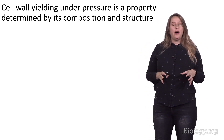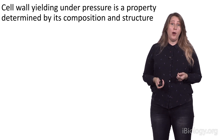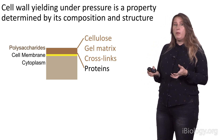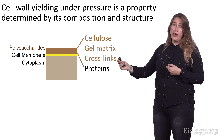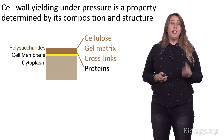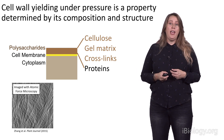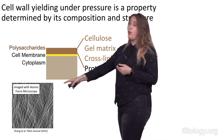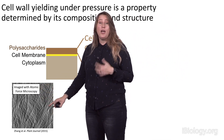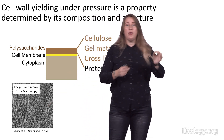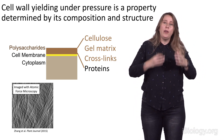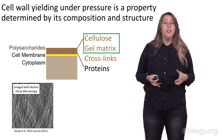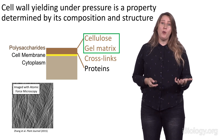Cell wall yielding under pressure is going to be a property of the composition and structure of the cell wall. We have a polysaccharide-based cell wall — it's mostly made of sugars. Here we're going to focus on two components: cellulose, which is a rigid, fibrous material, and the gel matrix within which it's embedded. Here we can see an image of a plant cell wall taken with an atomic force microscope, showing fibers due to cellulose alignment going in particular directions. In Arabidopsis, that gel matrix is mostly composed of pectins, which will become important a little bit later on.